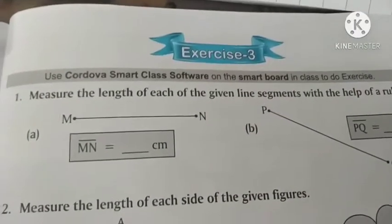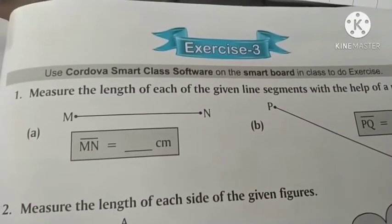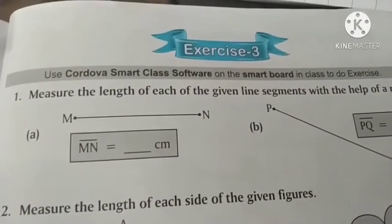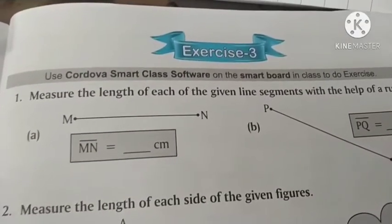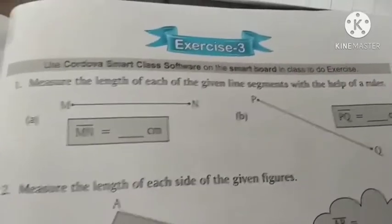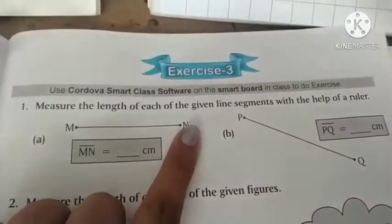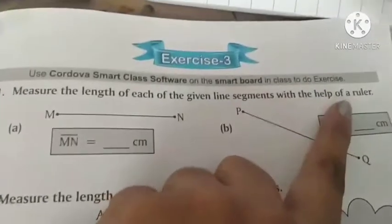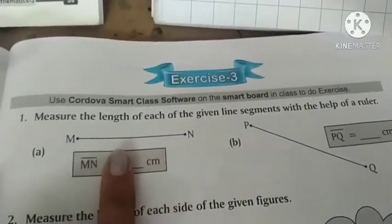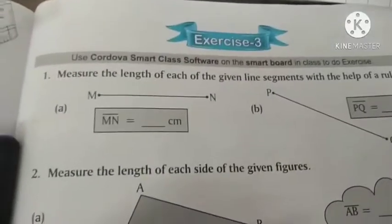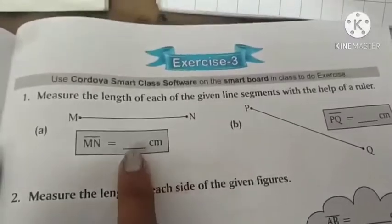Good morning students in maths standard class, chapter number 10. In last lecture we already discussed measuring line segment and drawing line segment. So today we are going to start exercise number 3. Now look at the first question: measuring the length of each of the given line segments with the help of a ruler. You have to map the scale and write how many centimeters.